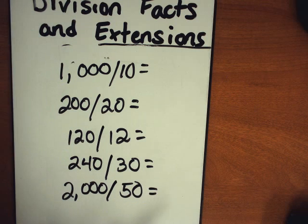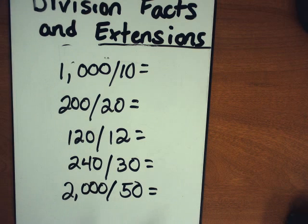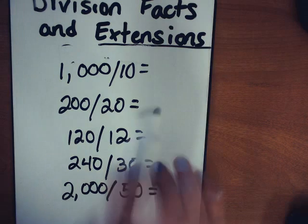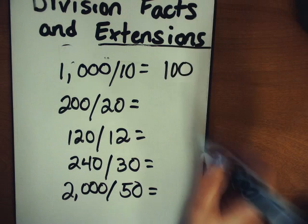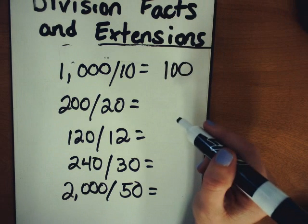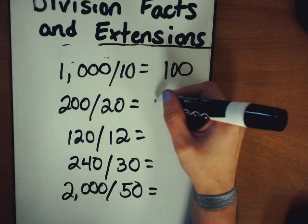So I hope that you've paused and then you're checking for understanding right now. So I've got 1000 divided by 10, 100, 200 divided by 20, 10.